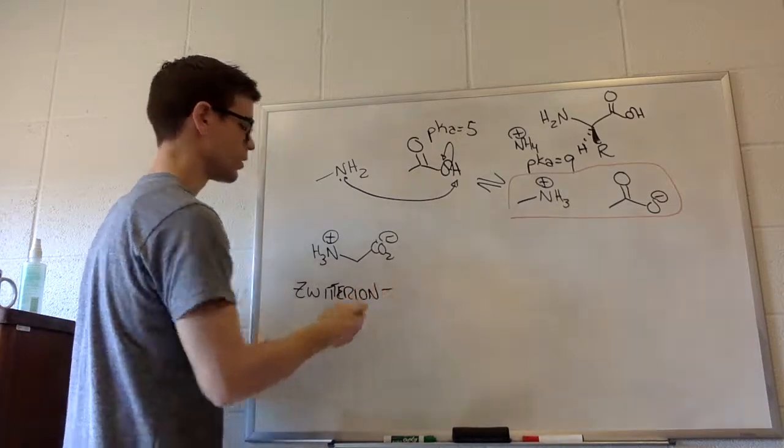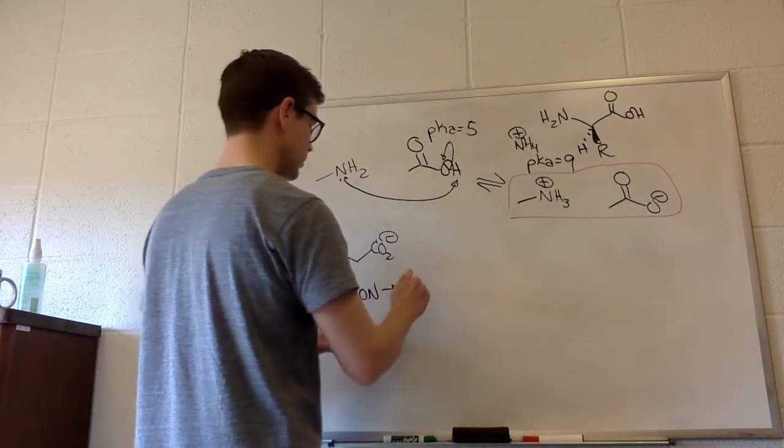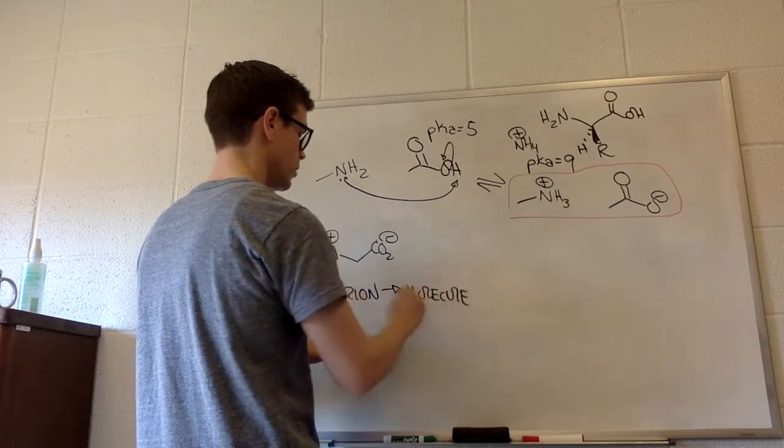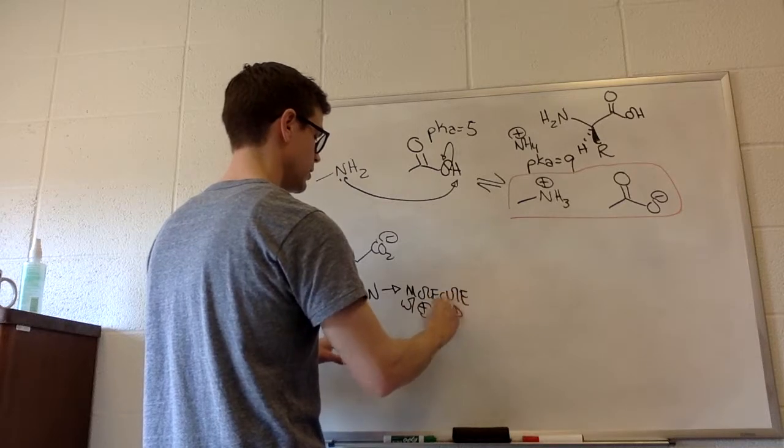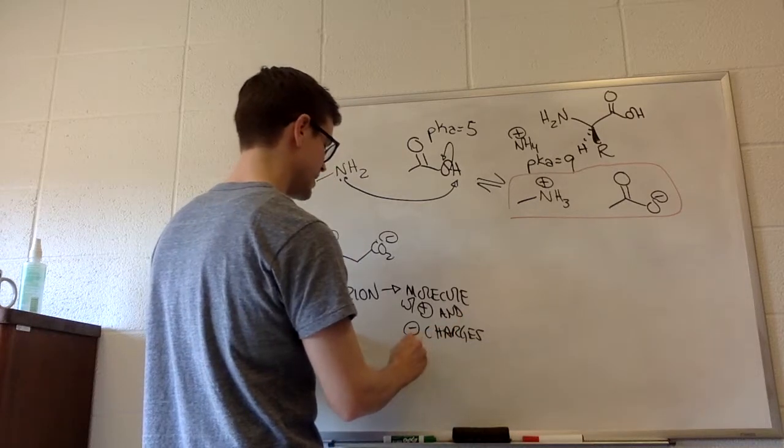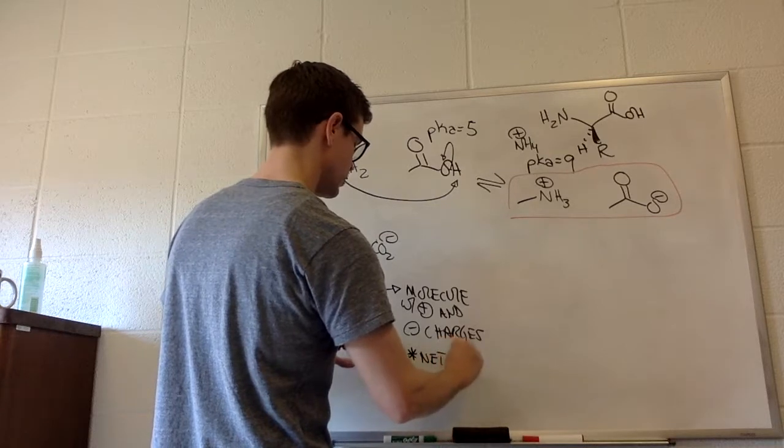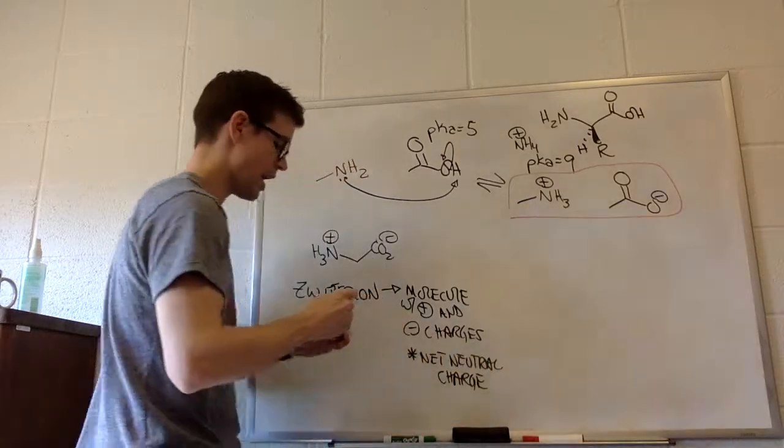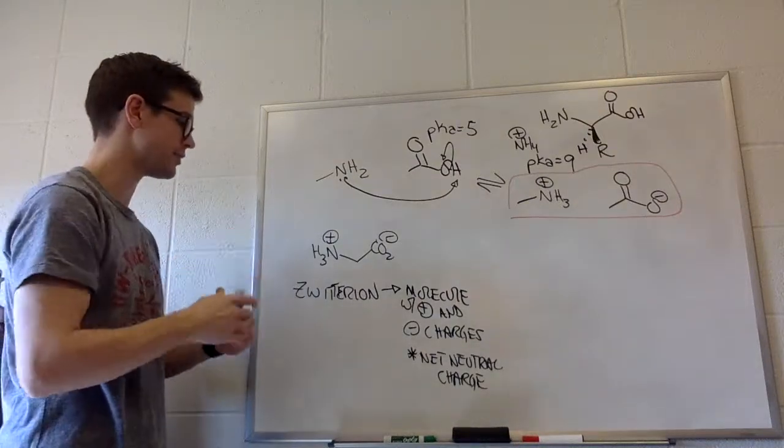So a zwitterion is a molecule with both positive and negative charges on that same molecule. We'll just write molecule with positive and negative charges, which means it's net neutral. So it has a net neutral charge. One minus one positive means that it is net zero charge, but there are ionic functional groups here.